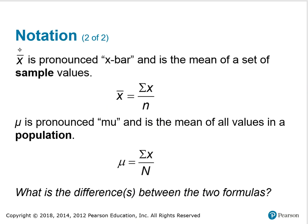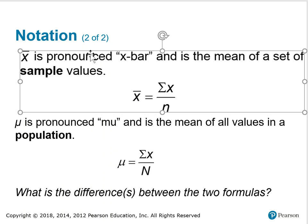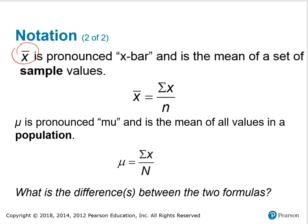This symbol x with a line on the top is pronounced x-bar and it's the mean of a set of sample values. This symbol is pronounced mu and is the mean of all values in a population. Here's the formula for the sample mean. Here's the formula for the population mean. What is the difference or differences between the two formulas?